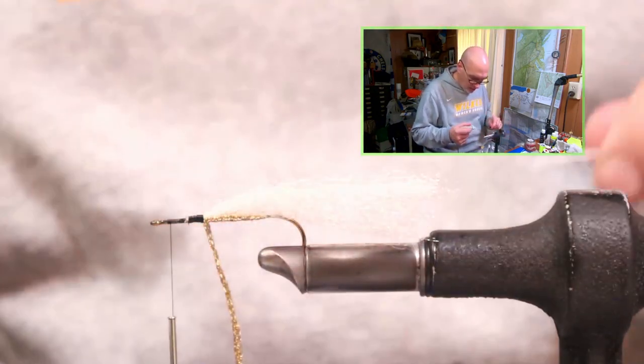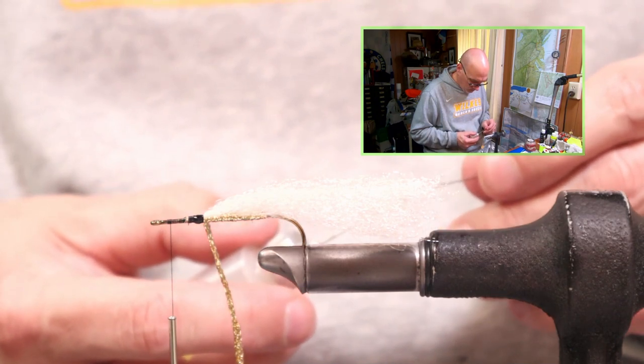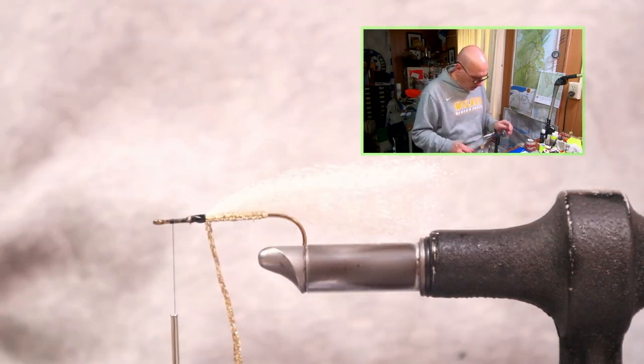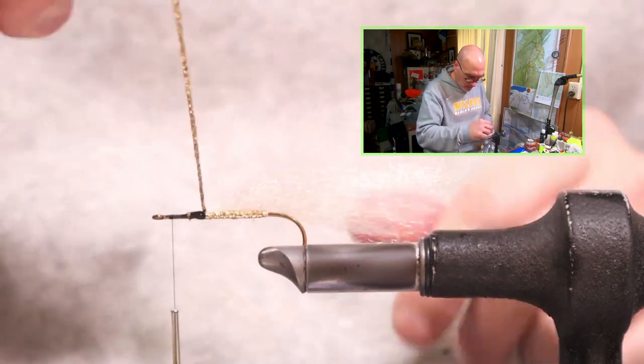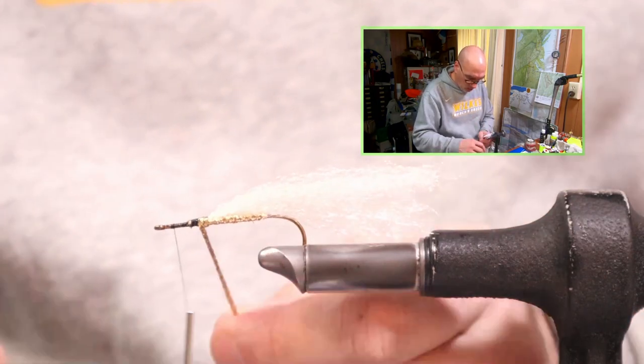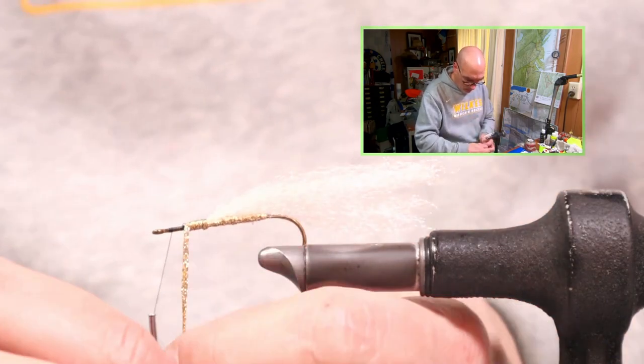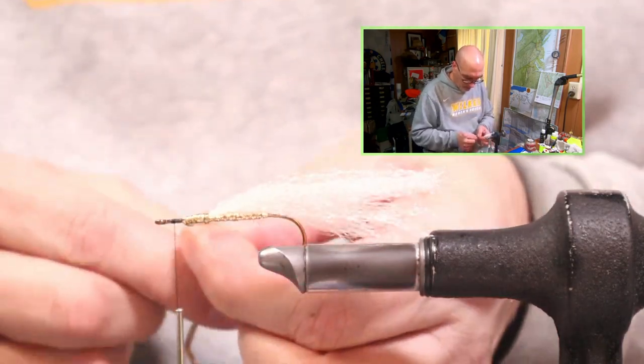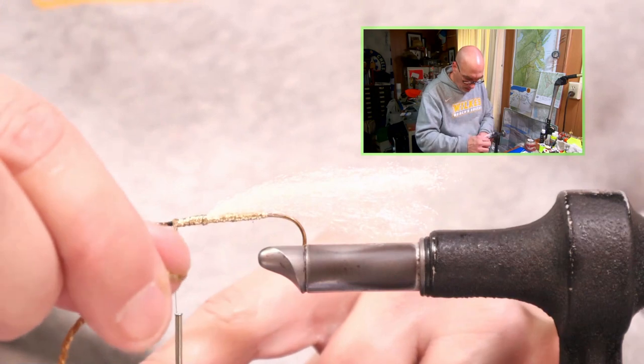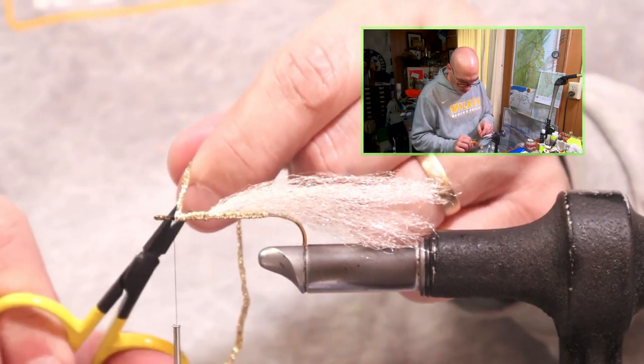So I've locked in that third segment, again a touch of lacquer-based head cement and this is the final wraps towards the eye of the hook with this gold tinsel. I'm going to stop about an eye's length back from the eye. Again this last wrap comes around in front of the bobbin so when I pick up my bobbin I can lock it into place and now we can snip.